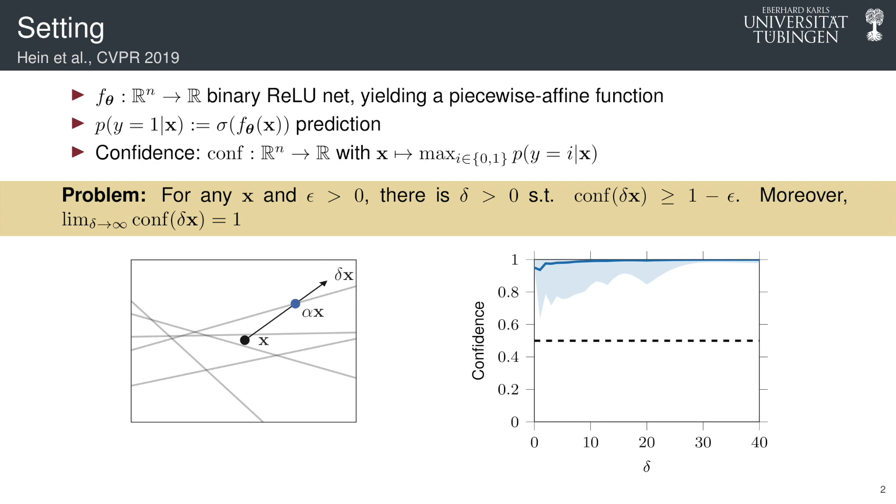On the right figure, we have a quantification of this property using the same data set from the previous slide. So we have a mean and standard deviation of the confidence over all data points, and we quantify this as δ grows larger.